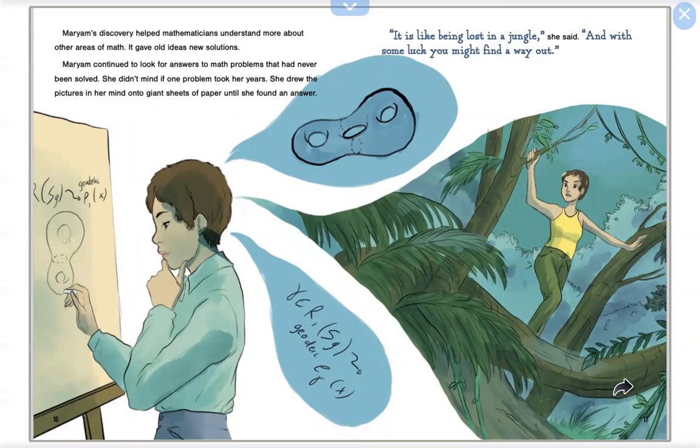Maryam's discovery helped mathematicians understand more about other areas of math. It gave old ideas new solutions. Maryam continued to look for answers to math problems that had never been solved. She didn't mind if one problem took her years. She drew the pictures in her mind onto giant sheets of paper until she found an answer. It is like being lost in a jungle, she said. And with some luck, you might find a way out.